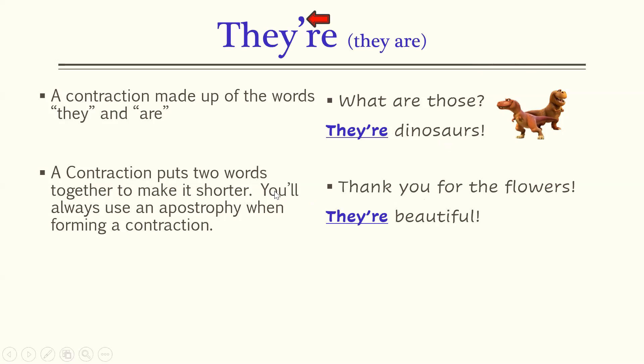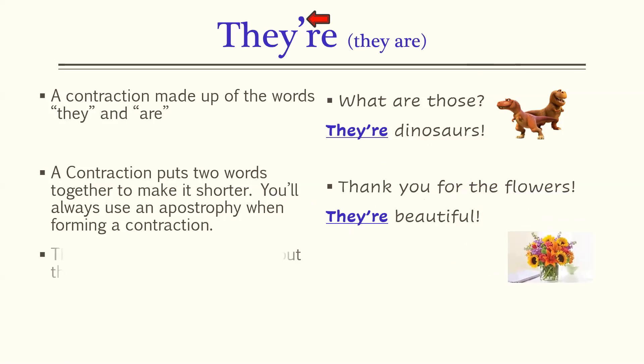Here's two more sentences: 'Thank you for the flowers. They're beautiful.' There are lots of contractions, but this one is pronounced there. Other contractions you've heard of are probably can't for cannot, haven't for have not, or she's for she is. But this one is they're for they are.